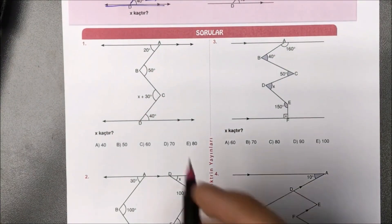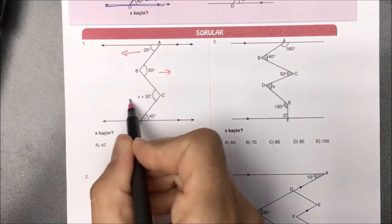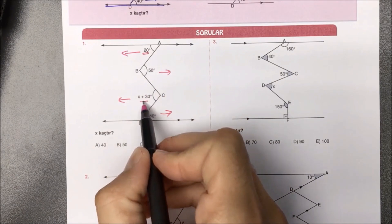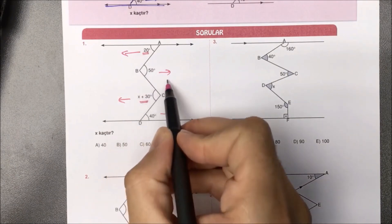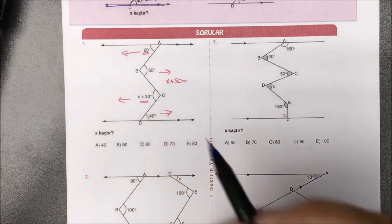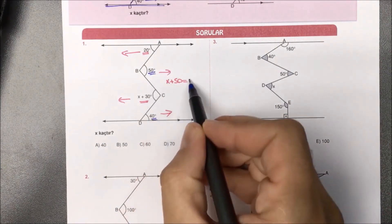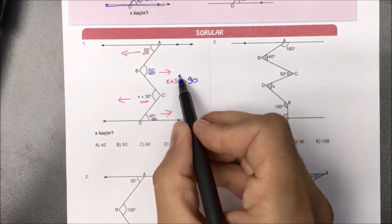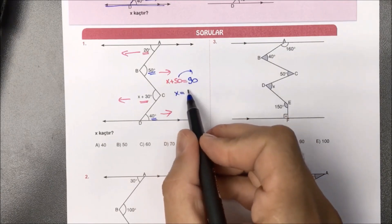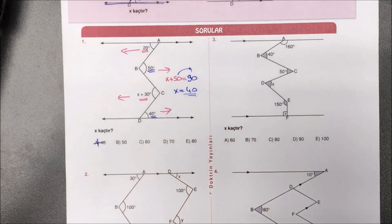Birinci soruya bakacak olursak: sola baktı, sağa baktı, sola baktı ve sağa baktı. Sola bakanların toplamı 20 ile X artı 30; toplayacak olursak X artı 50 gelir. Sağ bakanların toplamı 50 ile 40'ın toplamı 90 gelecek. 50'yi karşıya attığımız takdirde 90 eksi 50'den aradığımız X yanıtı 40 olarak bulunmuş olur.